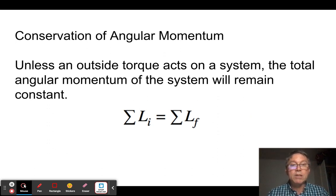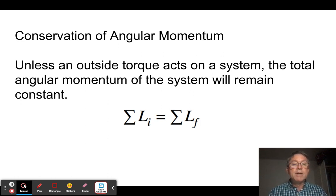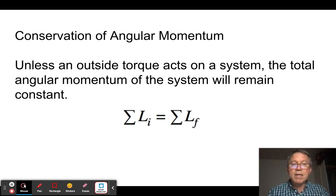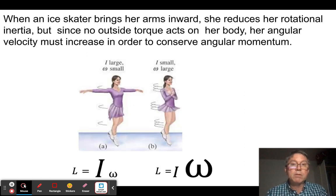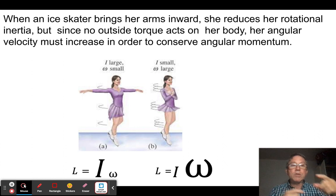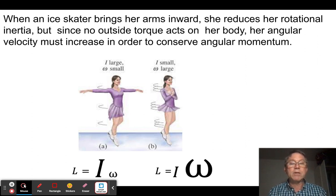The most important thing today is conservation of angular momentum. In the absence of an outside torque, the angular momentum you start with equals the angular momentum the system ends with — the same idea as linear momentum but using torques and angular momentum. A classic example: an ice skater spinning brings her hands in and spins faster.